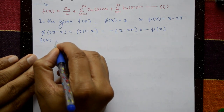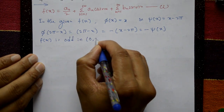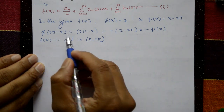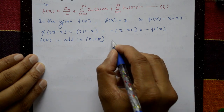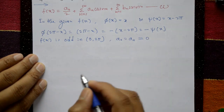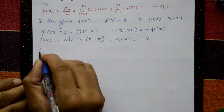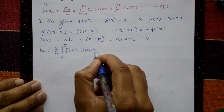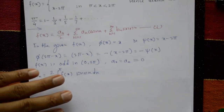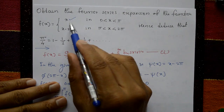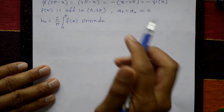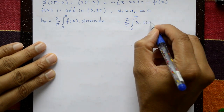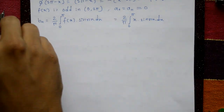Since φ(2π minus x) equals minus ψ(x), the function is odd. f(x) is an odd function on the interval 0 to 2π. For an odd function, a0 and an are both zero, so only bn is required. bn equals 2/π times the integration from 0 to π of f(x) sin(nx) dx. On 0 to π, f(x) = x, so we integrate x sin(nx) dx.